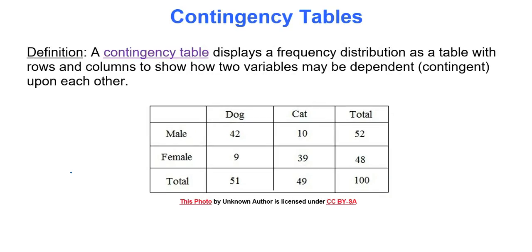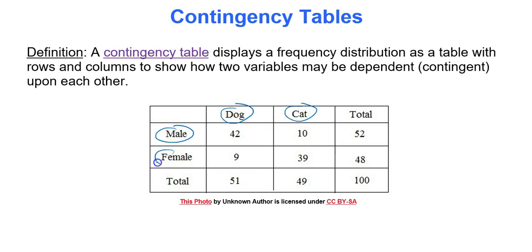A contingency table displays a frequency distribution as a table with rows and columns to show how two variables may be dependent or related to each other. For instance, you could look at the number of people who own dogs and cats and break it up by males and females, and look at those different frequencies to determine if there's a relationship between someone's gender and whether they own a dog or cat.